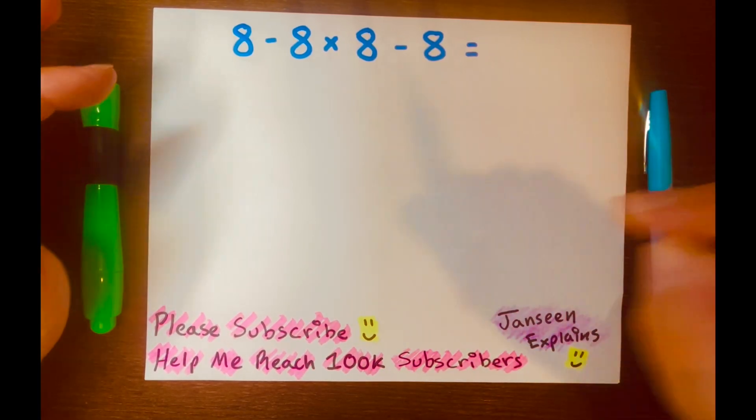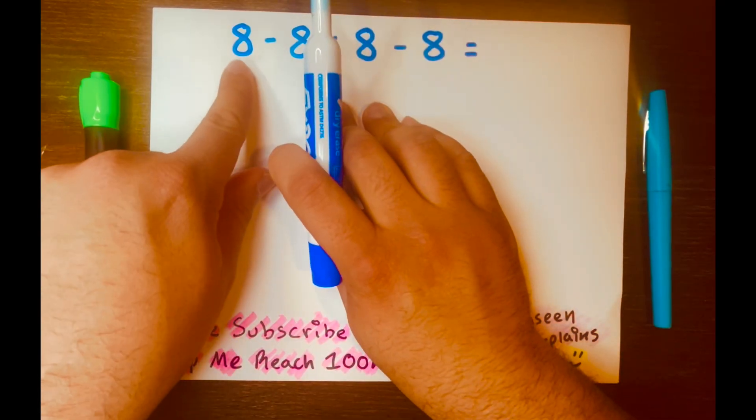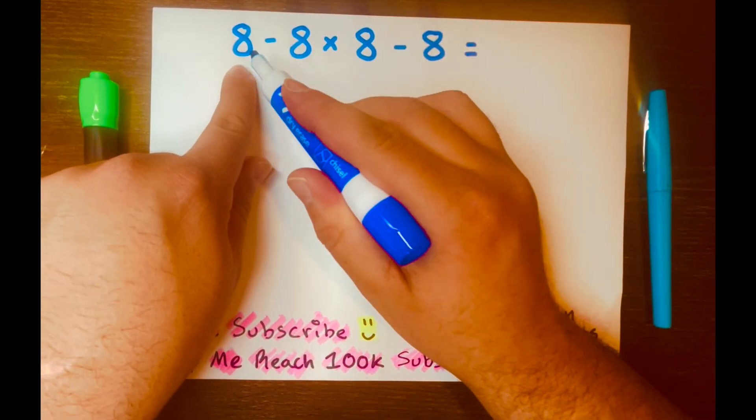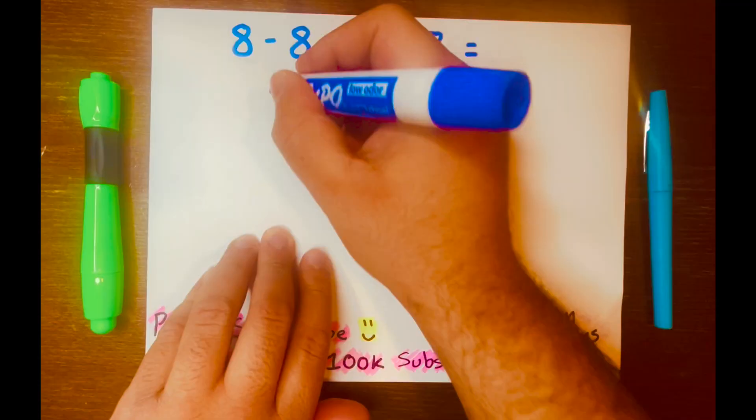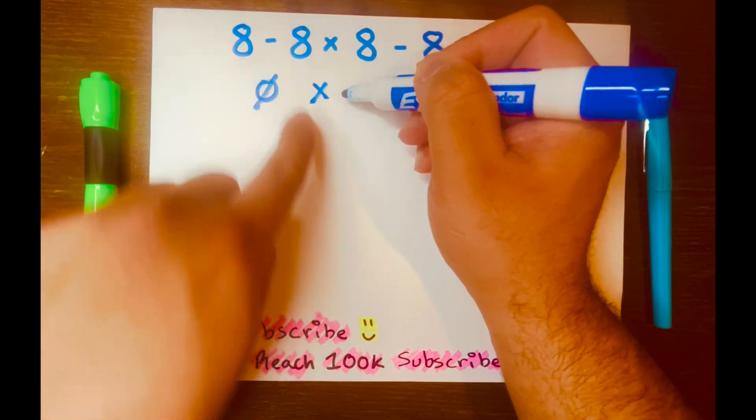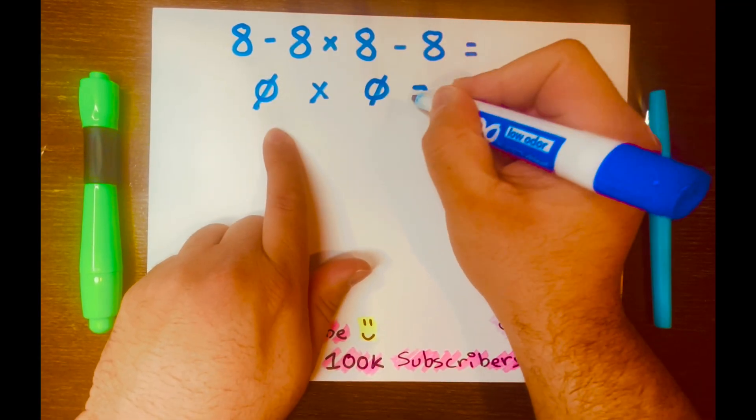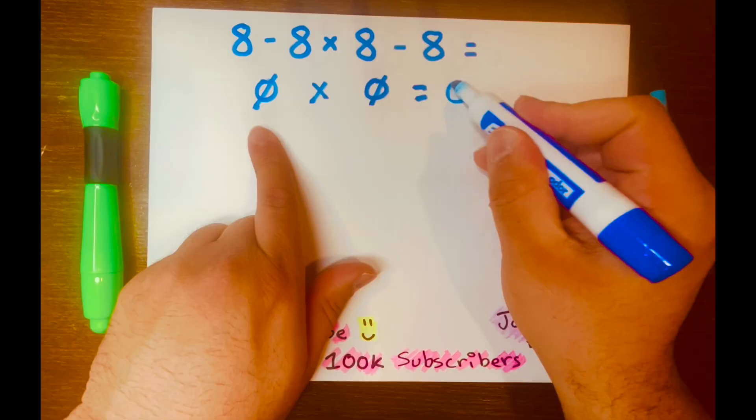Hi, everyone. Some people, when they start solving this math problem, they'll subtract or start with 8 minus 8, which is 0. And then they'll bring down the times symbol down, and then 8 minus 8 is 0. And so the answer will be 0.